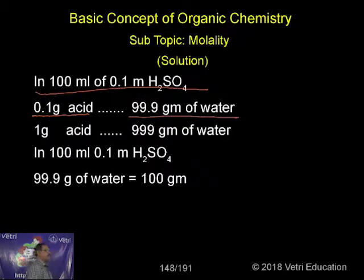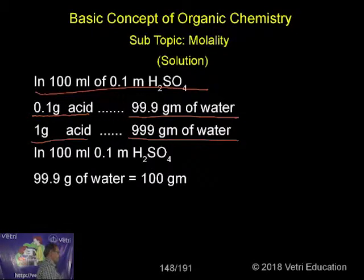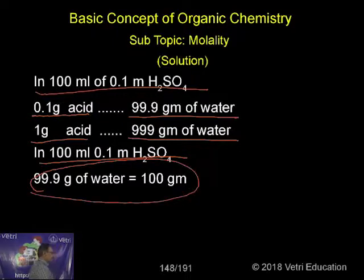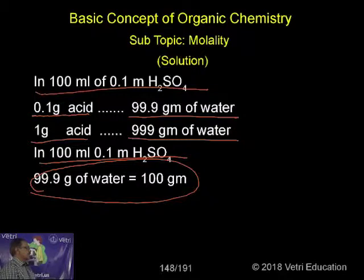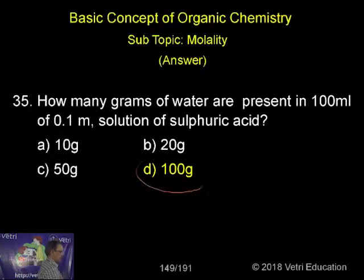99.9 grams of water is present. So 1 gram of acid means 99 grams of water. In 100 mL of 0.1 m sulfuric acid, we can say there are 99.9 grams of water, which is approximately equal to 100 grams of water.